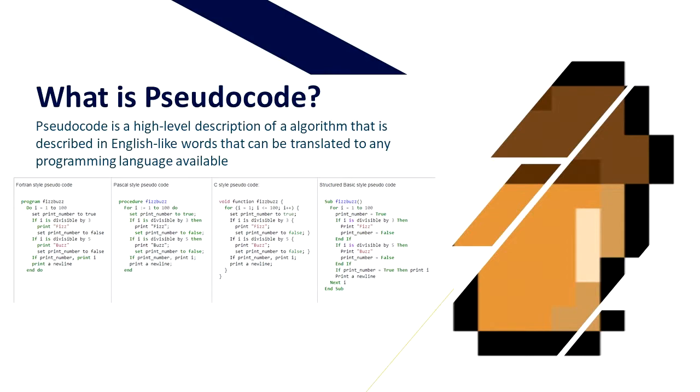What is Pseudocode? Pseudocode is a higher level description of an algorithm that is described in English-like words that can be translated into any programming language available. Here are four different algorithms for the same thing. Notice this is not syntax specific and it can be translated to any language possible.